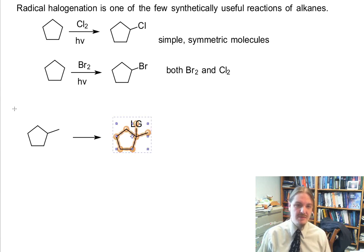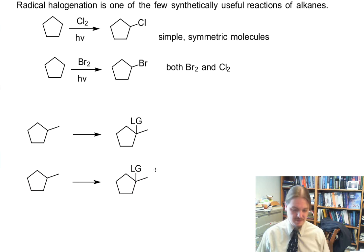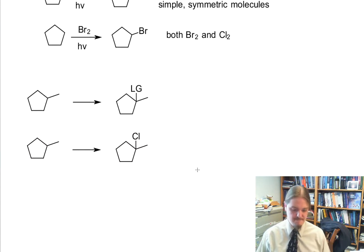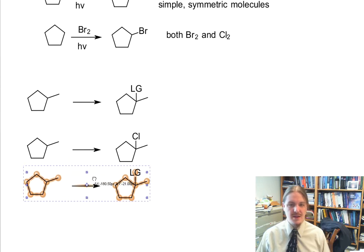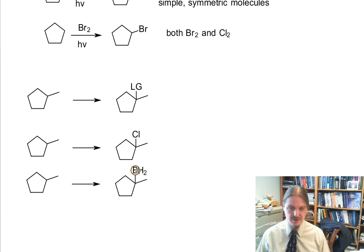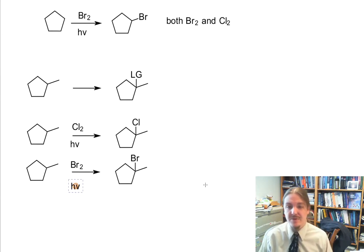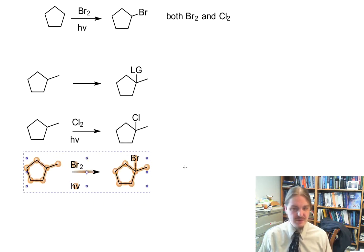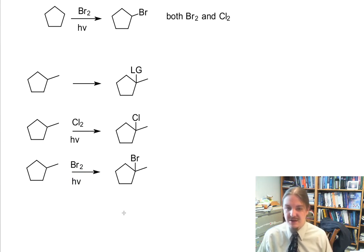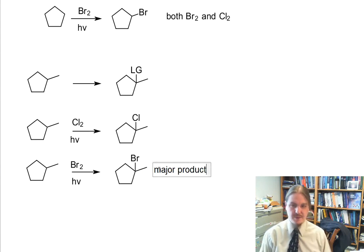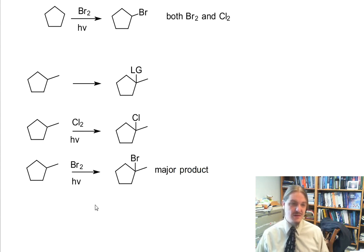So now which halogen do we want to use? Let's compare bromine versus chlorine. Cl2 with hν and Br2 with hν. Which one is going to be better? There might actually be a difference. We know from the video on selectivity that this is going to be the major product of radical bromination, and it's going to be the major product like 90 plus percent of the product mixture.